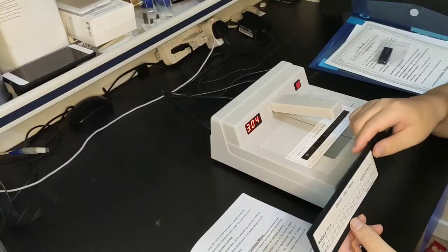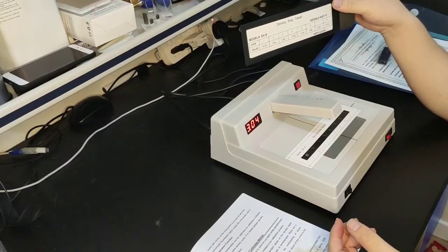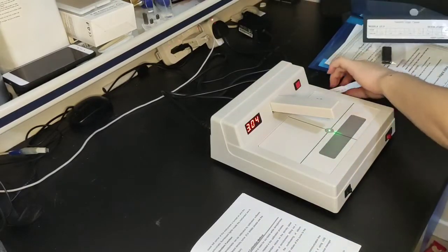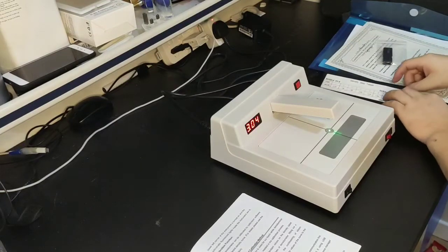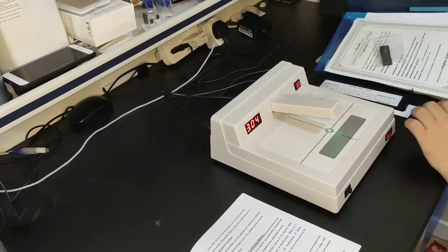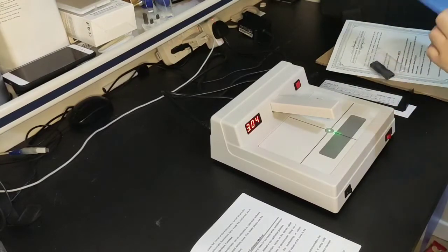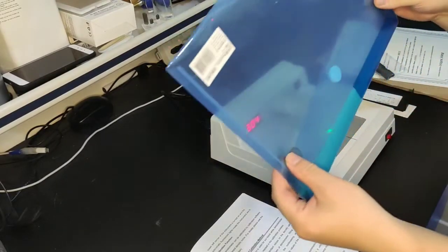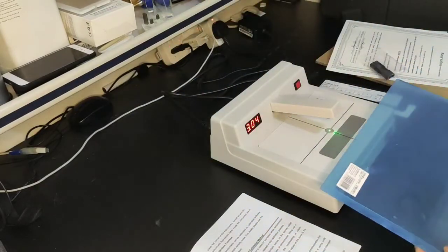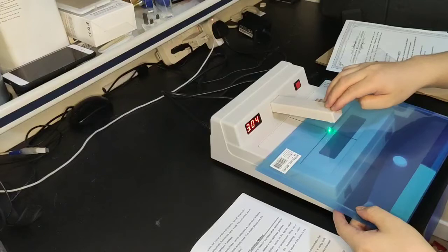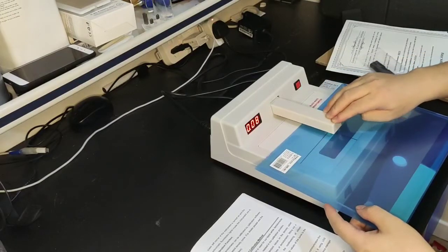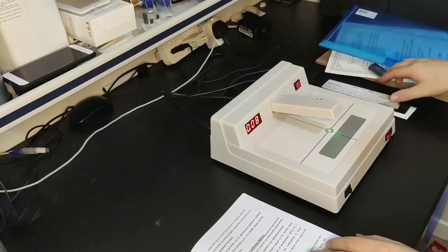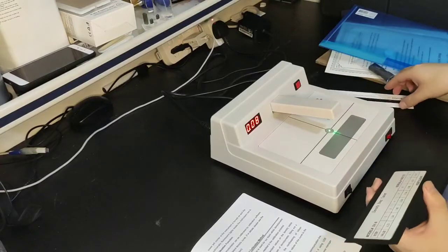If we have other films, maybe we can put some other films. Let me check. Maybe we use this one. This is a document holder. We can use this one, no problem, as long as it's transparent. It has some color, so we can also test this density. We just press down, release. It is 0.08, the density. So this is how we use this machine.